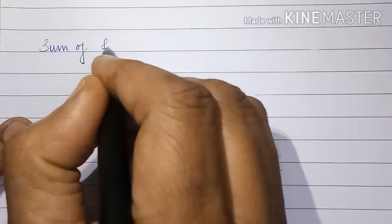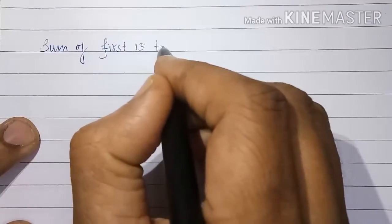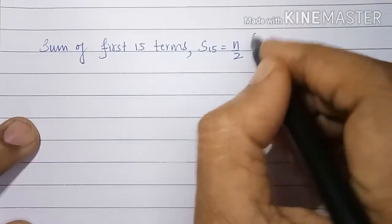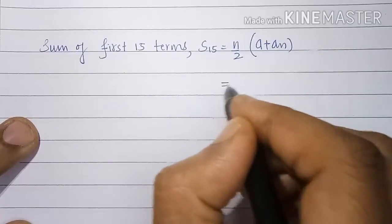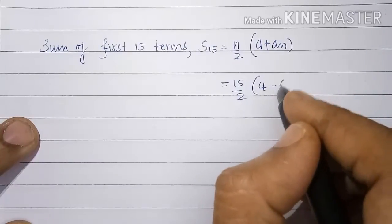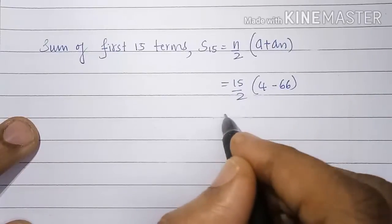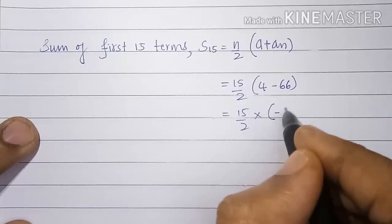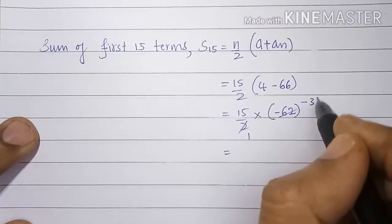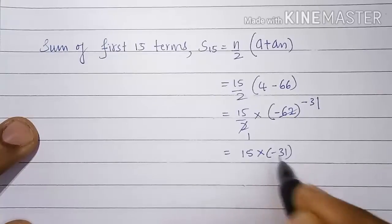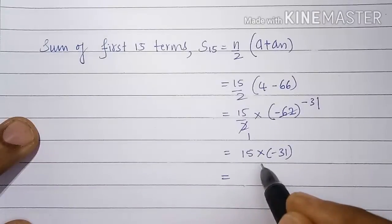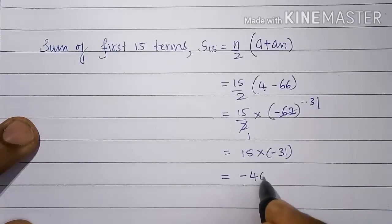Sum of first 15 terms: S15 is equal to n by 2 into the bracket a plus an, that is 15 by 2 into the bracket 4 minus 66. It will be 15 by 2 into minus 62, which gives 15 into minus 31, equal to minus 465.